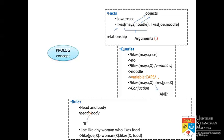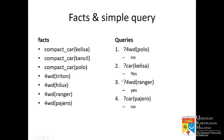Let's look at a more concrete example. Kelisa is a compact car, Cantil is a compact car, Polo is a compact car. Then we have another class: Triton is a four-wheel drive, Hilux is a four-wheel drive, Ranger is a four-wheel drive, Pajero is a four-wheel drive. So how do we query? Is Polo a four-wheel drive? It's not, so the answer is 'no'. Is Kelisa a compact car? Yes. Is Ranger a four-wheel drive? It matches, so 'yes'. Is Pajero a compact car? No, so the answer is 'no'.